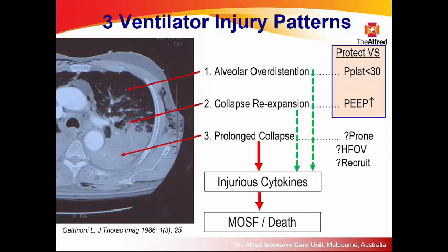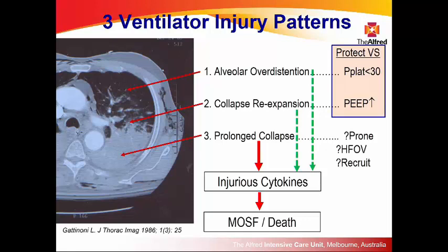We're all familiar with the CT scans of ARDS — we know it has three functionally distinct zones. Protective ventilation reduces injury in the least dependent zones by stopping over-distension with low plateau and reduced driving pressures. PEEP stops injury from the intermediate zone, but the basal zone is left unfixed. We know that the lung can produce injurious cytokines which cause death from multi-organ failure.